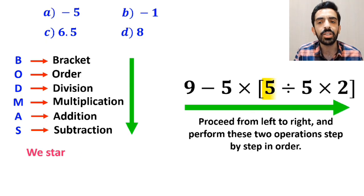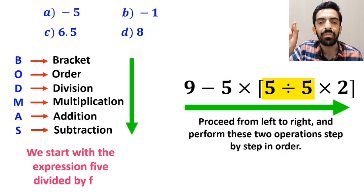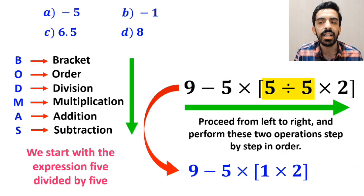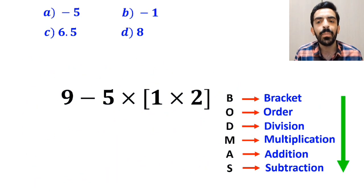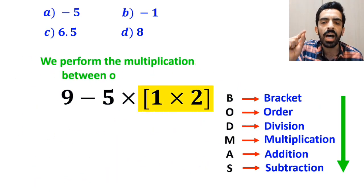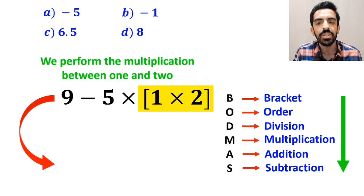Okay, first we start with the expression 5 divided by 5, and write this expression as 9 minus 5 multiplied by 1 times 2 inside the brackets. And the next step, we perform the multiplication between 1 and 2, and this expression simplifies to 9 minus 5 times 2.